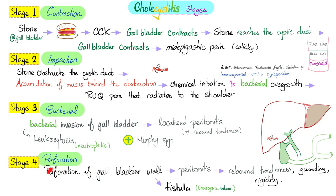Bacteria can cause perforation — this is when it gets really bad, that's an emergency. When it perforates, it can cause peritonitis with rebound tenderness and guarding rigidity. Or it can cause a fistula between the gallbladder and the small intestine — we call this a cholecystoenteric fistula. Cholecysto is the gallbladder; enteric is the small intestine.